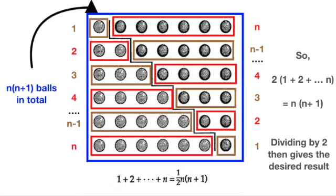So now we get the results. 2 times 1 plus 2 plus 3 until n equals n times n plus 1. Dividing by 2 gives the final result as desired. This first proof was due to the ancient Greeks, apparently.